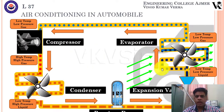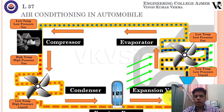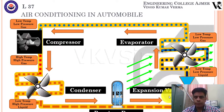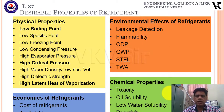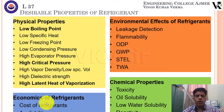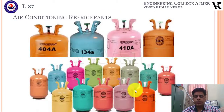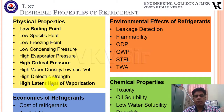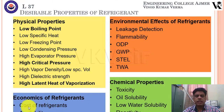As you can see in this diagram, in our last class we discussed the air conditioning system. If you haven't attended the class, you can see the last video to understand how it works. Last time we also discussed the desirable properties of refrigerants and four major categories: physical properties, environmental effects, economics of refrigerants, and chemical properties.